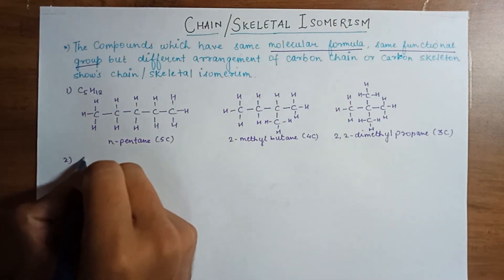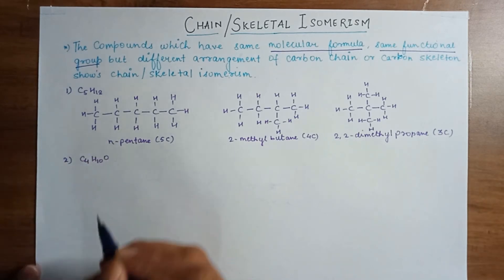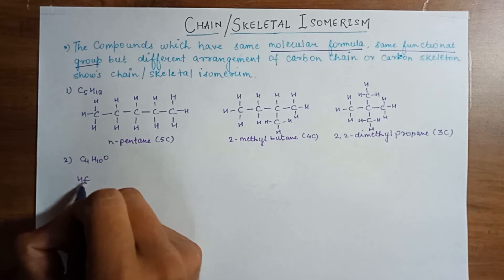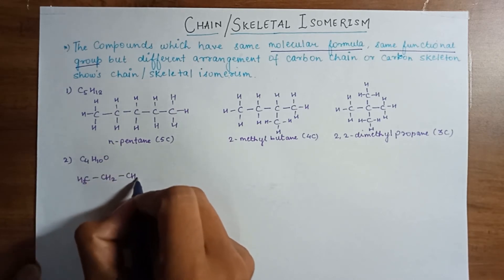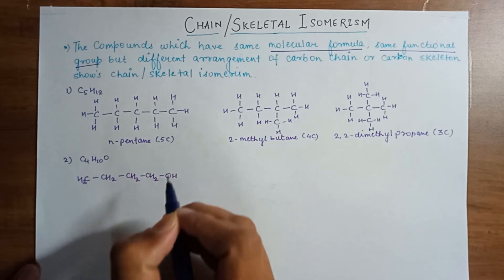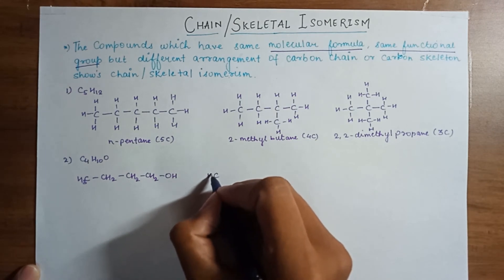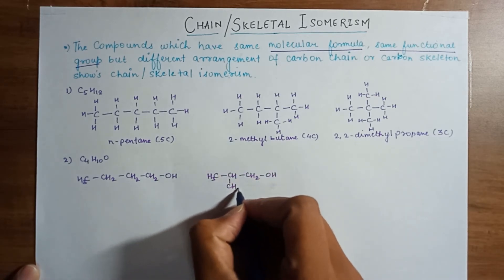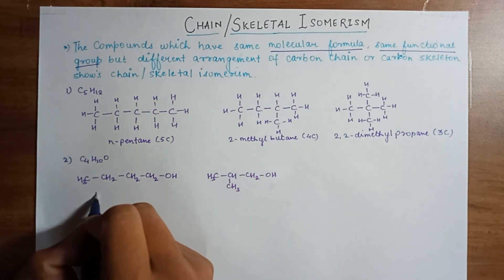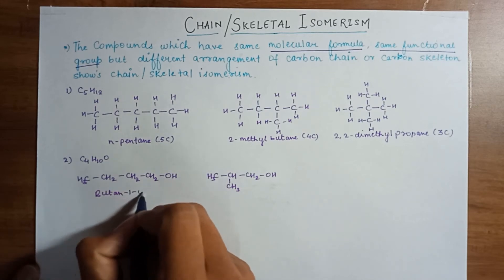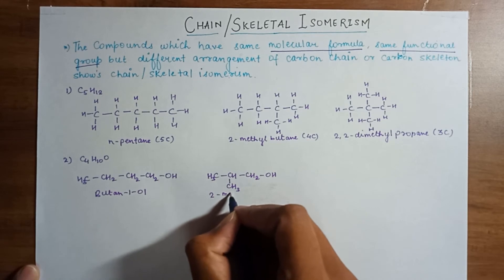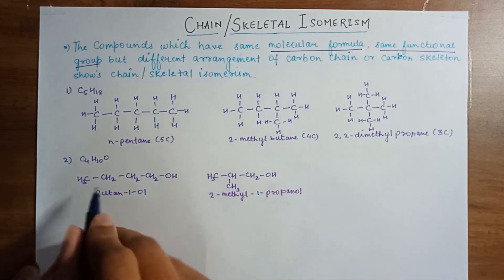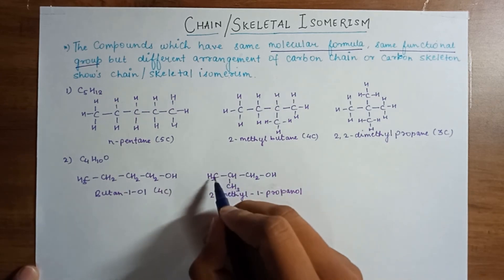The second example is C4H10O. Let us see how many chain isomers are possible with the same functional group. One structure is butan-1-ol with a 4-carbon chain. Another is 2-methyl-1-propanol, which has a 3-carbon main chain with a methyl branch.